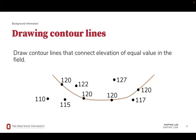Drawing contour lines involves connecting elevation points of equal value in the field. When drawing contour lines, you're not just connecting the dots — you are connecting points that fit within your contour interval. So for example, if it goes by 10s, 20s, or 5s, it's reasonable to assume that 120 is one of the contour lines, so you would connect all of the 120-meter points. Then, if you were going by 20s, the next one up would be 140.